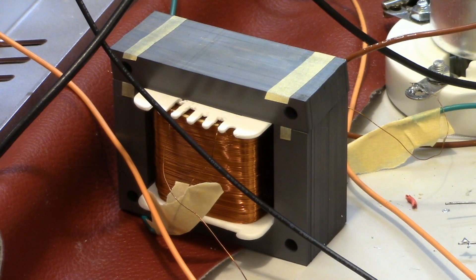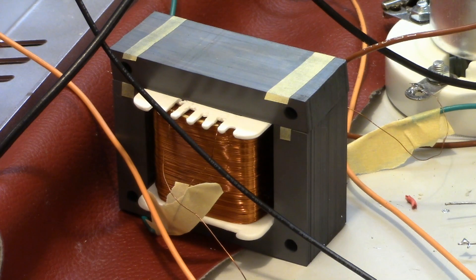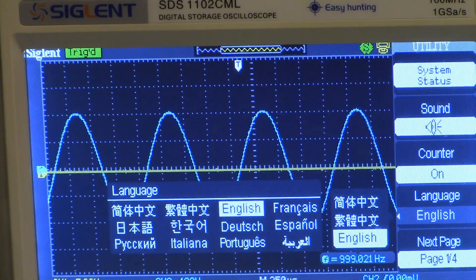This is the sound from the air gap of the prototype interstage transformer. The signal is amplified by the 6DJ8 input stage tube.